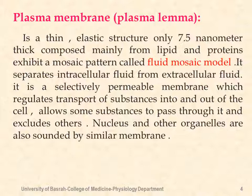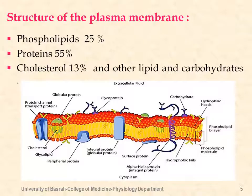The plasma membrane exhibits a mosaic pattern called the fluid mosaic model. It separates the intracellular fluid from the extracellular fluid. It is a selectively permeable membrane which regulates transport of substances into and out of the cell, allowing some substances to pass through while excluding others. The nucleus and other organelles are also surrounded by a similar membrane.